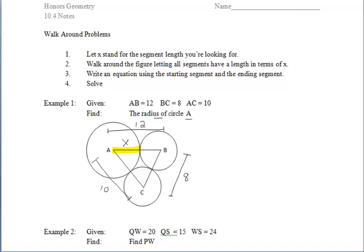We have another radius — this yellow segment here — and since all radii in a given circle are congruent, we can also call that yellow segment X. Now you can walk around the problem either counterclockwise or clockwise to fill in the remaining segments in terms of X. I'm going to go clockwise. We'll come across this purple segment next, which is the radius of circle B. Since the whole segment AB has a length of 12, we can represent the purple segment with the expression 12 minus X. Since all radii in a given circle are congruent, we can call the other purple segment 12 minus X as well.